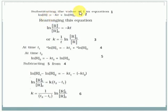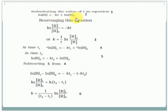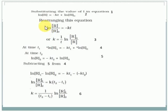Substituting this value back into the first equation, we get ln(r) = -kt + ln(r naught), where r naught is the initial concentration of the reactant. Rearranging the equations, taking r terms on one side, we get ln(r naught/r) = -kt. So the rate constant k is equal to 1/t times ln(r naught/r).